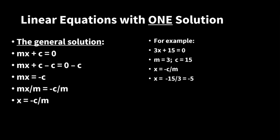How can we get solutions a bit quicker? There is a general solution to any linear function. Let's try to figure it out. If y equals mx plus c and y equals 0, we shift c to the right by adding minus c, so c disappears and the right side becomes minus c. Then we divide both sides by m to isolate x. So x equals minus c divided by m.